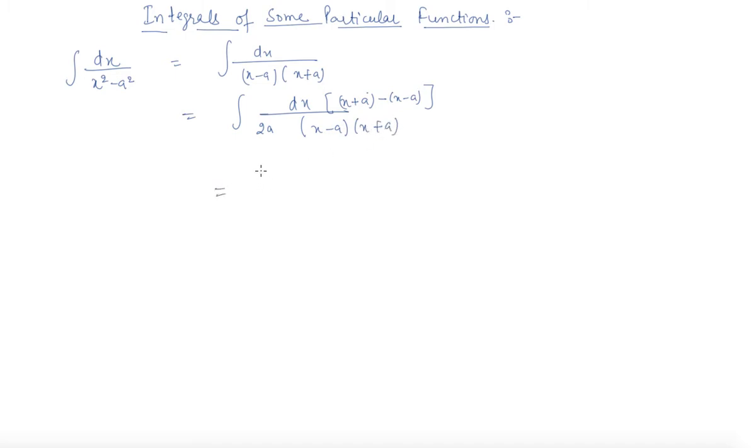So now can I write 1 by 2a out of the integral because it is a constant, dividing this by each term. So now our integral becomes very easy.